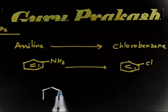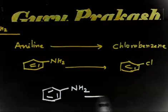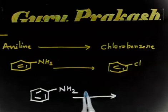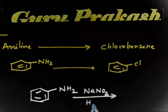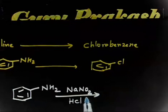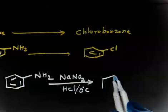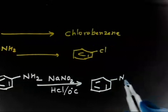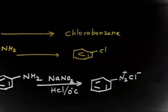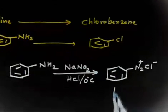We have aniline, and first it is treated with NaNO2/HCl. This reaction forms a diazonium salt, and if the temperature is kept low — around 0 degrees centigrade — we can isolate the diazonium cation: N2+ Cl−.